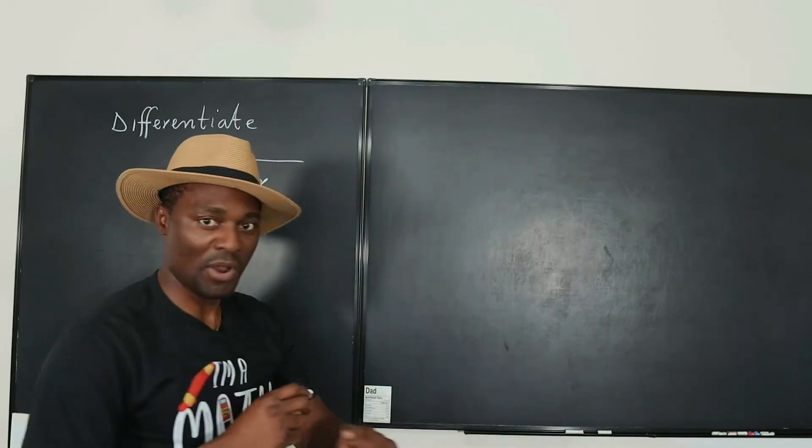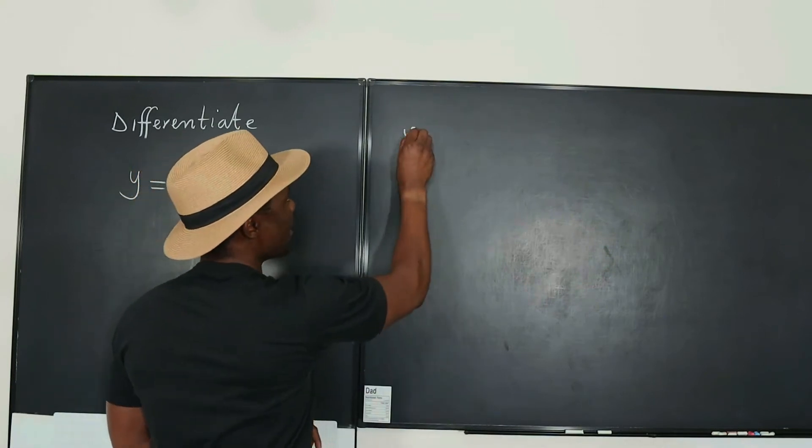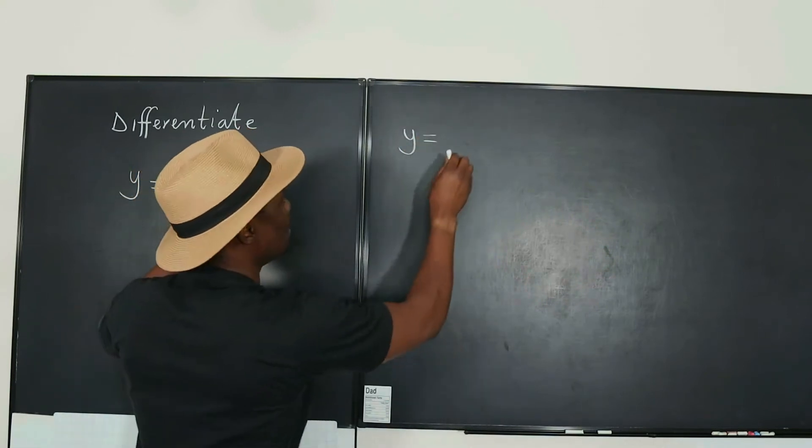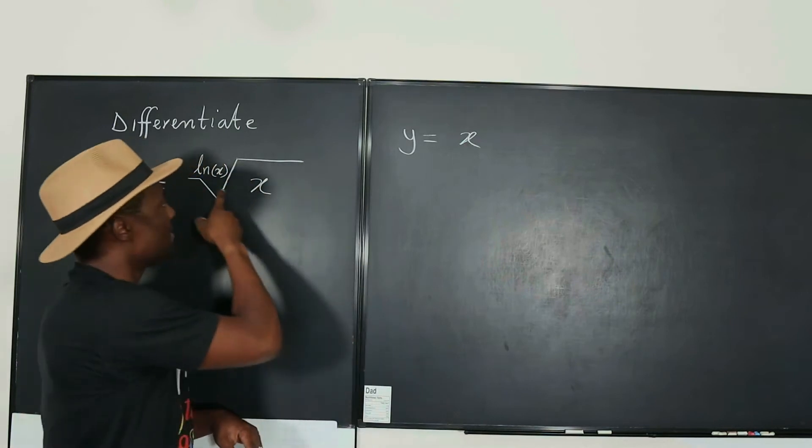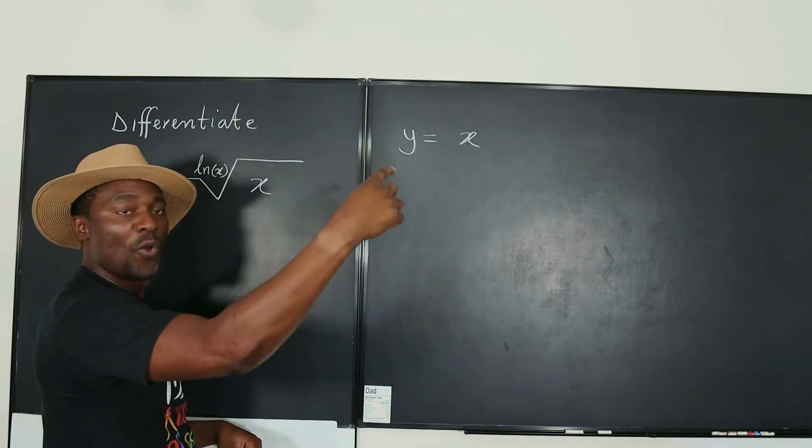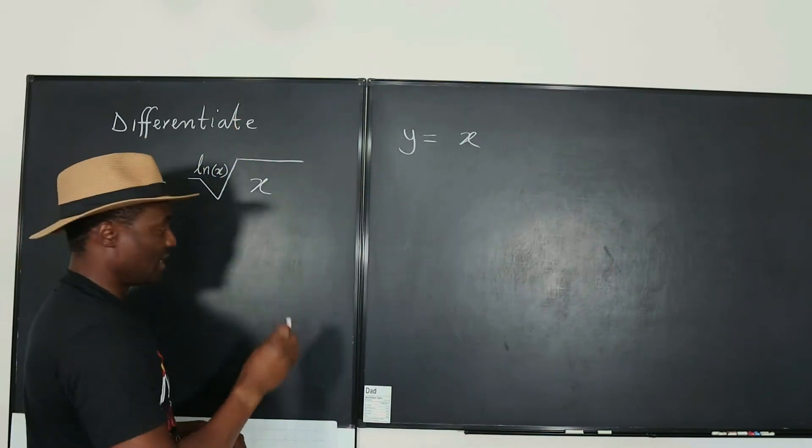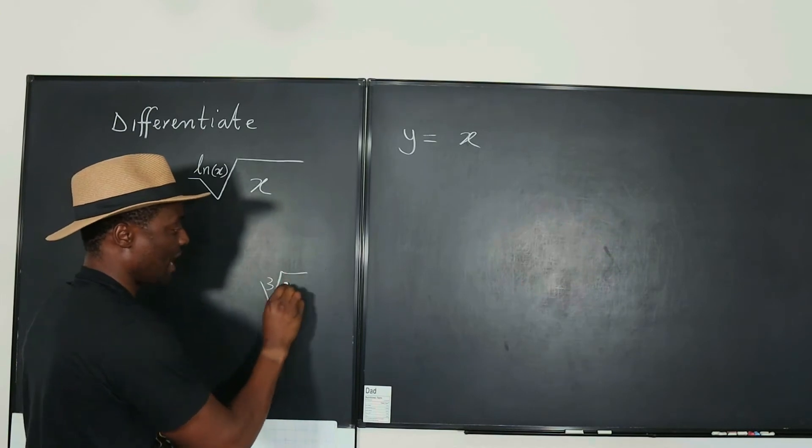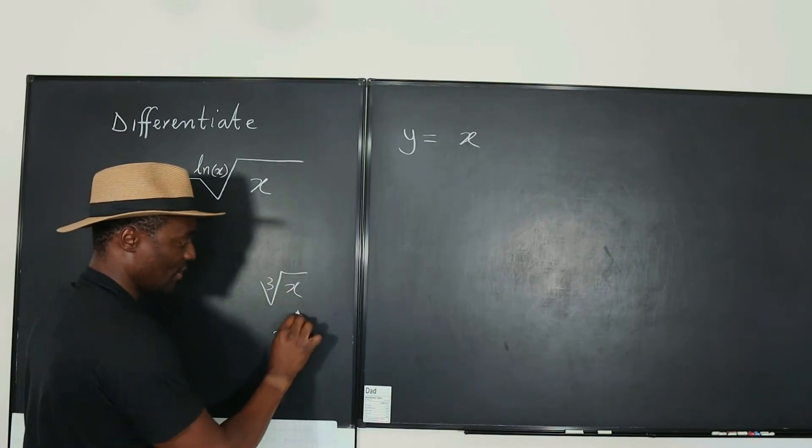So I'm going to say for this problem, y is equal to, this is going to be x, and remember if it's a root, it means it's 1 over whatever this is. For example, if I told you cube root of x, you could write it as x to the 1 third.